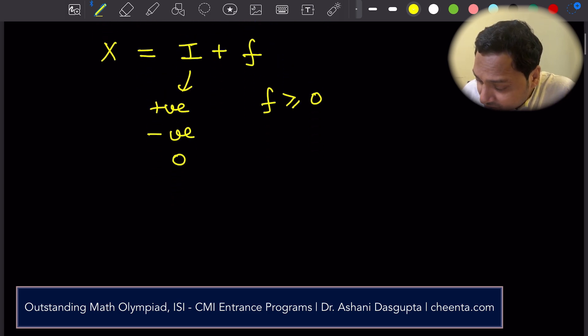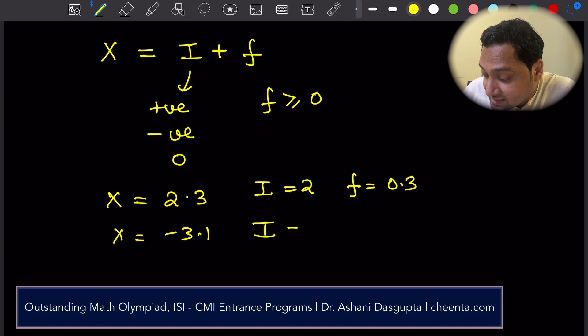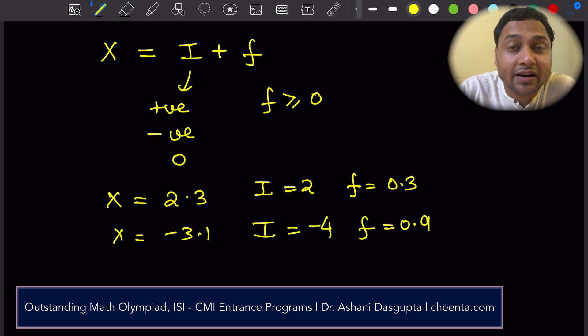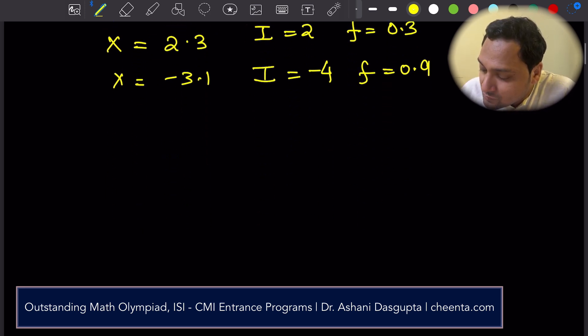So for example, let's say x is equal to 2.3. Then i will be 2 and f will be 0.3. If x is equal to minus 3.1, then i is negative 4 and f is 0.9, because negative 4 plus 0.9 is negative 3.1. Similarly, if x is equal to 5, then i is 5, f is 0.